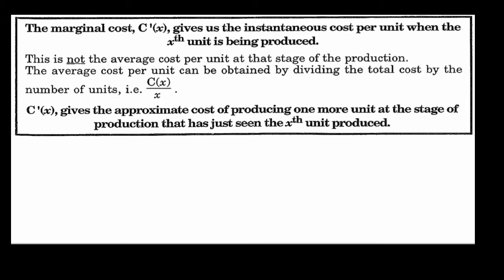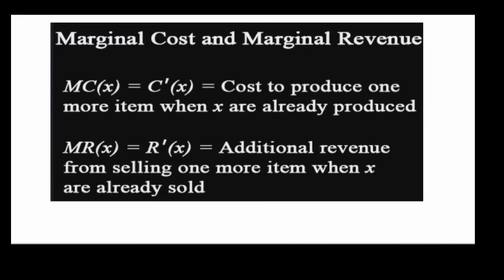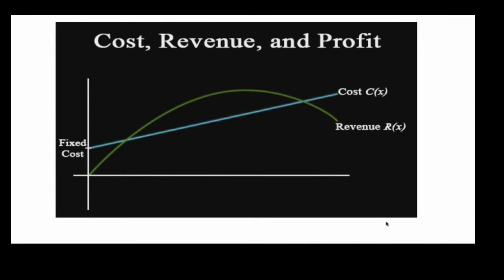It's important to understand that this derivative is not giving you the average cost per unit. We get the average cost by dividing total cost by the number of units produced. The marginal cost function gives the approximate cost of producing one more unit at the current stage of production — so C'(100) is the approximate cost of producing the 101st unit.